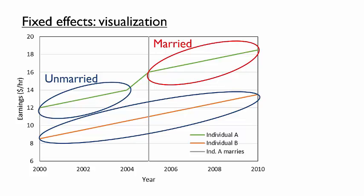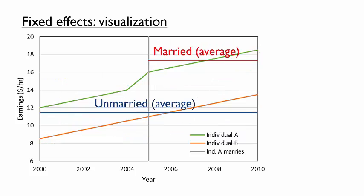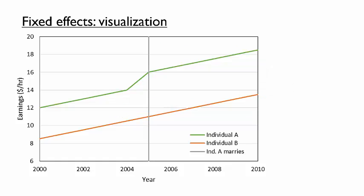With no other control variables, we would simply be comparing the averages of these two groups. Notice this difference — about $5.63 per hour — is the pooled OLS coefficient on the married variable. But as we suspected earlier, this probably does not reflect the impact of marriage on earnings. Perhaps we simply need to control for some other variable like age when using pooled OLS. If these two individuals are the same age in any given year, then holding age constant would mean that we are comparing the earnings of individual A after he is married to the earnings of individual B in the same year. The control would bring the married coefficient down to a bit under $5 per hour.